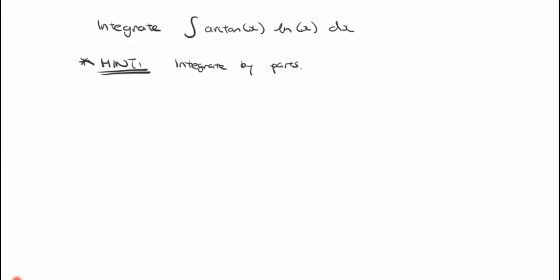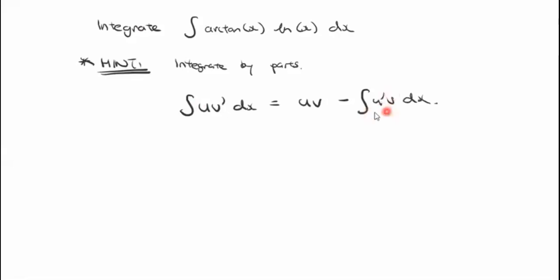Hopefully integration by parts is not foreign to you, but just a quick look: the integral by integration by parts is where you say the integral of u·v' with respect to x, where u and v are functions of x. You can use this technique to say it equals u·v minus the integral of u'·v with respect to x — basically the product rule in reverse.